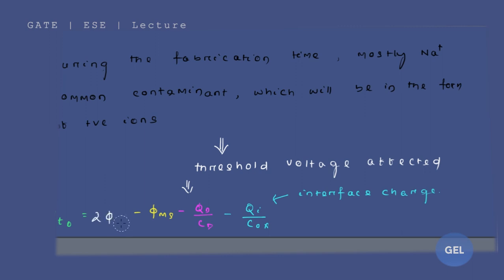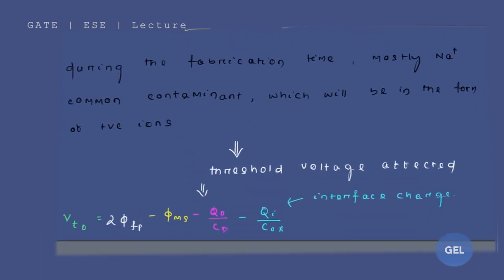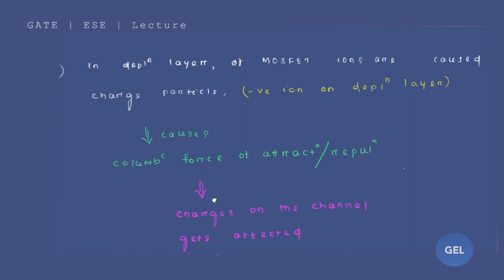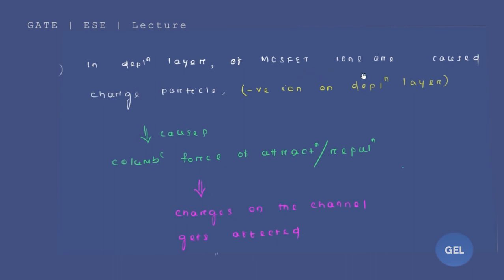So because of that, threshold voltage affected. So to add interface charge, this is my plus 2 phi fp. That what we have learned from the band diagram. This is the term. This is used for the depletion layer in your MOSFET.